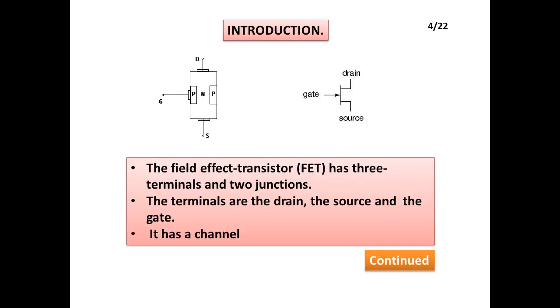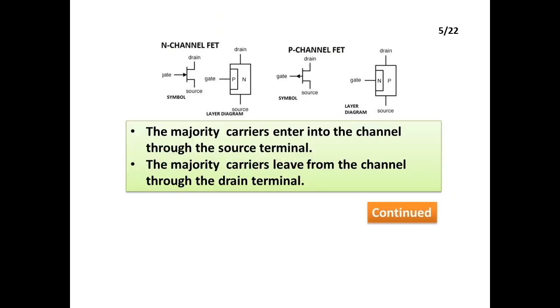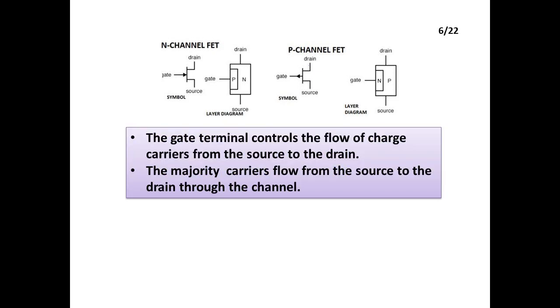Introduction: The Field Effect Transistor FET has three terminals and two junctions. The terminals are the drain, the source, and the gate. It has a channel. The majority carriers enter into the channel through the source terminal. The majority carriers leave from the channel through the drain terminal. The gate terminal controls the flow of charge carriers from the source to the drain.